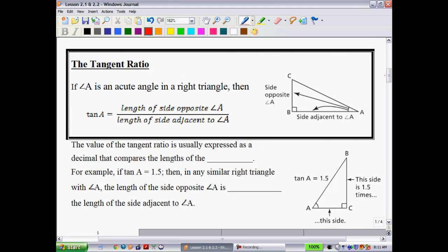So I'm assuming that you have done that. So now let's jump into the tangent ratio. If angle A is an acute angle—and acute angle means the angle is less than 90 degrees—in a right triangle, then we can say the tangent of some angle A is equal to the length of the opposite side over the length of the adjacent side.